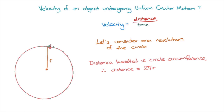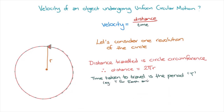The time taken to complete one revolution around the circle is the period, which we're going to call big T. For example, the period of the Earth travelling around the Sun, which we discussed earlier, is 365 days — and that's the period of the Earth's orbit.